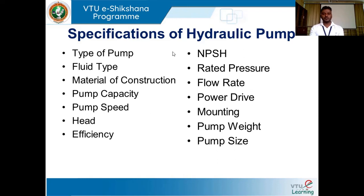Regarding efficiency, normally the efficiency of a centrifugal pump is less than that of a reciprocating pump, since leakage in the case of a reciprocating pump is very less and its volumetric efficiency is higher. Efficiency is output divided by input. For a hydraulic pump, the output is hydraulic energy — in the case of positive displacement pump, the output is discharge pressure; in the case of centrifugal pump, the output is discharge or flow rate.